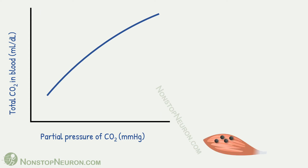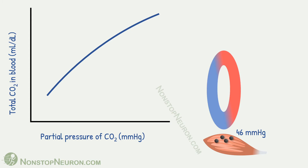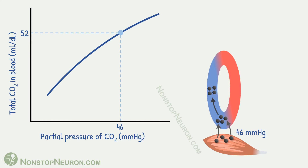At peripheral tissues, partial pressure of carbon dioxide is about 46 mmHg. Due to this higher partial pressure, carbon dioxide enters into the blood. This value of partial pressure corresponds to a point on the curve. At this point, total content of carbon dioxide is about 52 ml of carbon dioxide per 100 ml of blood. Thus, carbon dioxide content in venous blood is about 52 ml per 100 ml blood.